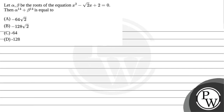Hello, Bacho. In this question, it is given that let alpha and beta be the roots of the equation x squared minus root 2x plus 2 equals to 0. Then, alpha power 14 plus beta power 14 is equals to — we have to find the value of this.